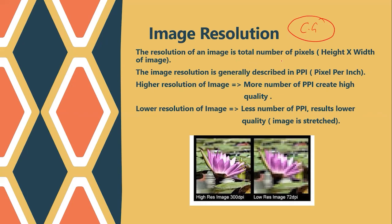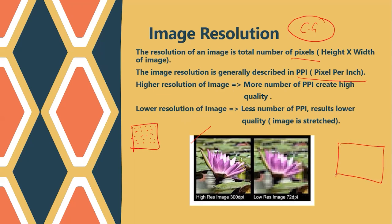The resolution of an image is the total number of pixels. If you take a small screen with small pixels, that is the resolution of the image — the total number of pixels indicates the resolution. Image resolution is generally described in pixels per inch. If you want higher resolution, a higher resolution image consists of more pixels per inch, which creates high quality. In one inch, if there are more pixels, obviously the resolution is high, and you can see the picture more clearly.